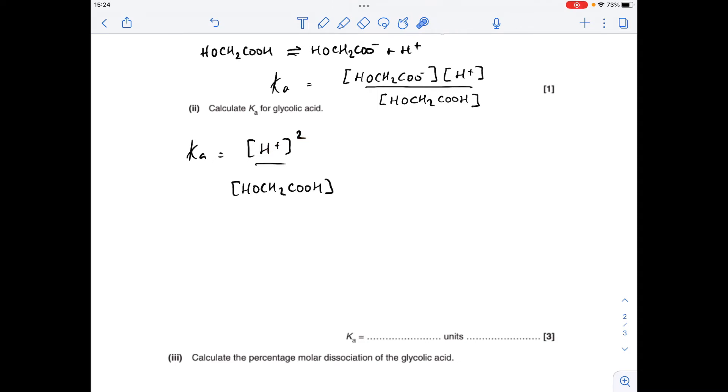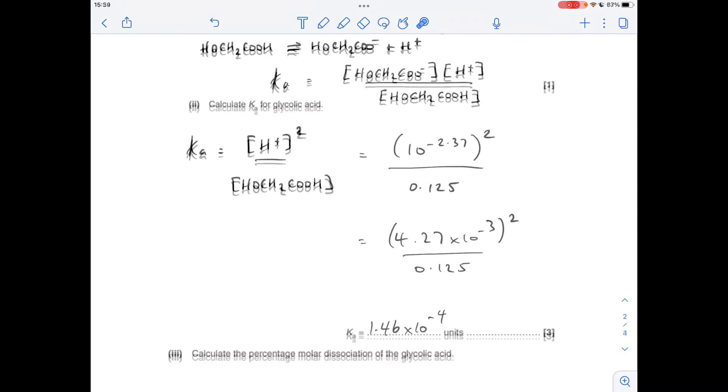Obviously, we need to square that, and then divide that by the original concentration of the glycolic acid, which was 0.125, so that would go in there. So I've put the numbers in. We'll do the units in a second, but anyway, it's coming out at Ka of 1.46 times 10 to the minus 4.